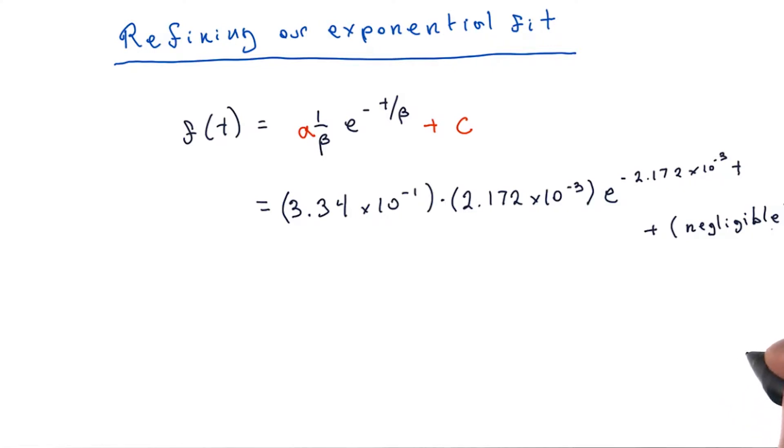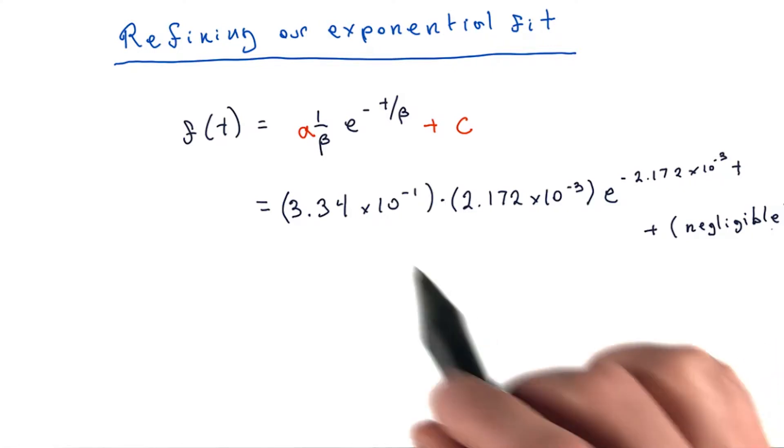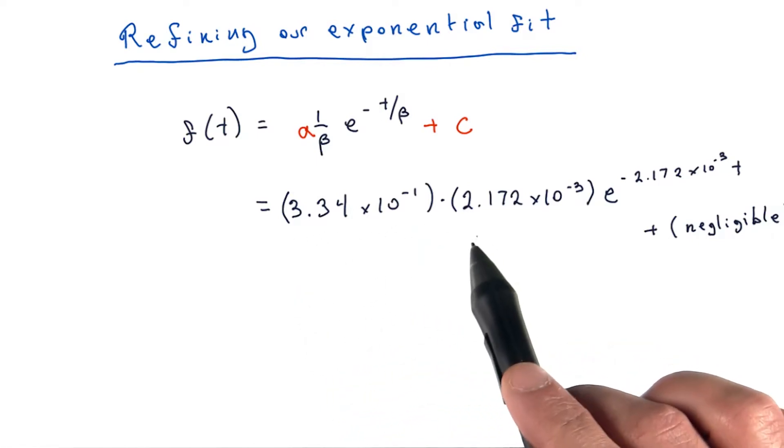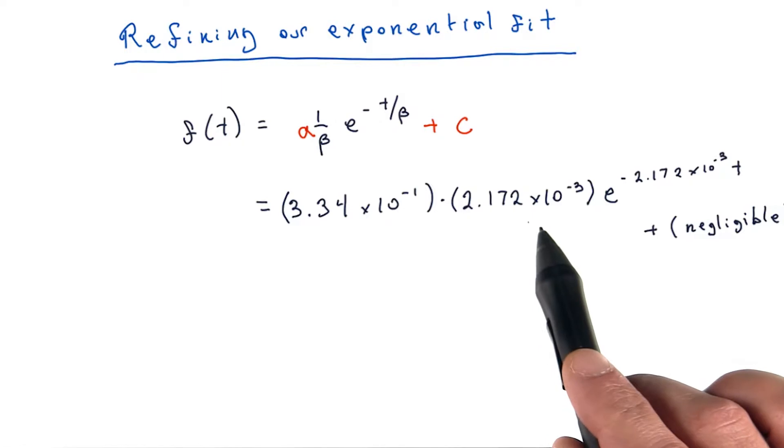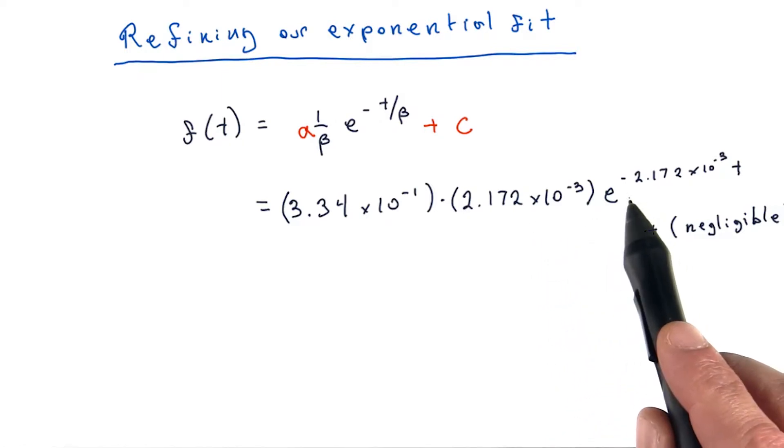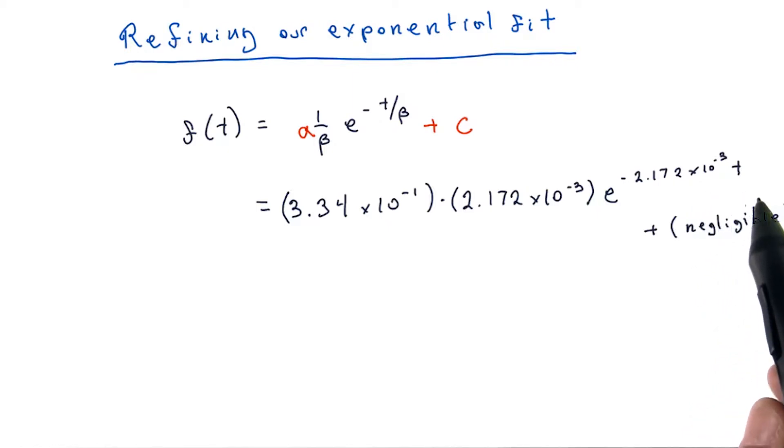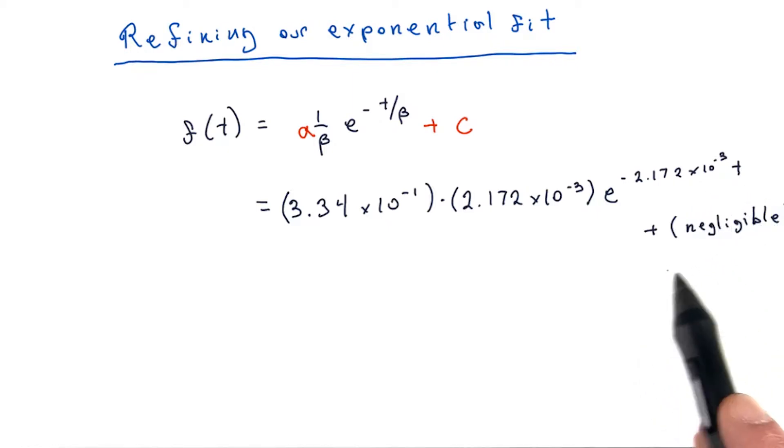So the result of our new fit looks like this. It says that our new model is approximately 3.34 times 10 to the negative 1 times 2.172 times 10 to the negative 3 times e to the power of minus 2.172 times 10 to the minus 3 times t plus an offset that is nearly 0.